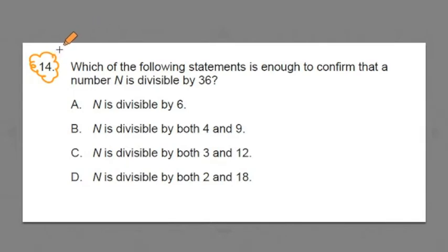We'll start by reading it over and then walk through some of these concepts involved. For number 14, which of the following statements is enough to confirm that a number N is divisible by 36? Is it enough to say that N is divisible by 6? Or N is divisible by both 4 and 9? Or that N is divisible by both 3 and 12? Or N is divisible by both 2 and 18?